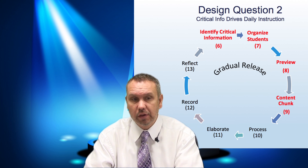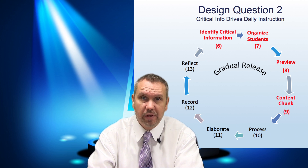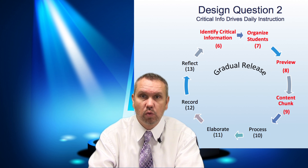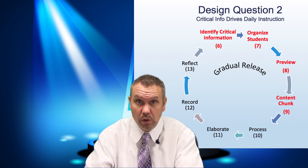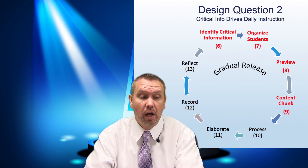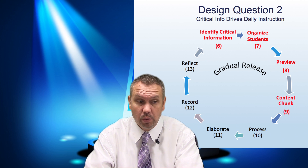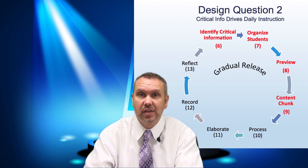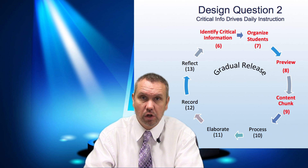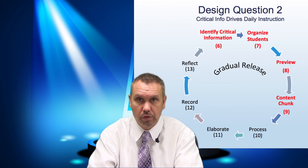The first four elements are shown in red — those are the elements where the teacher directs the activity. The remaining elements — processing new information, elaborating on new information, recording new information, and reflecting on new information — are shown in black, because that is where the teacher gradually releases to the students for them to independently work through that new information.